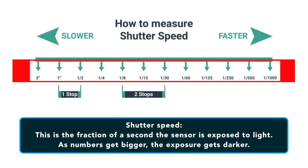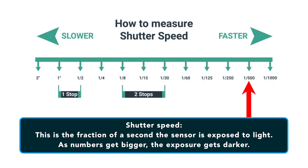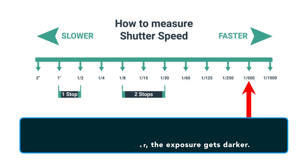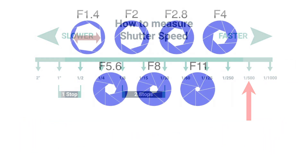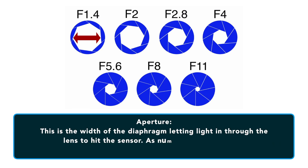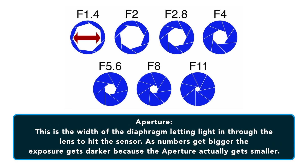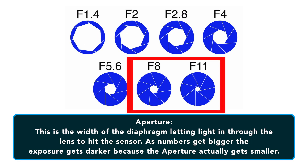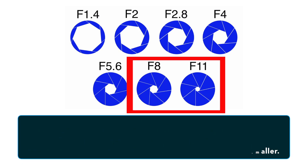Shutter speed is the fraction of a second the sensor is exposed to light. As the numbers get bigger, the exposure gets darker. Aperture is the width of the diaphragm letting light in through the lens to hit the sensor. As numbers get bigger, the exposure gets darker because the aperture is actually getting smaller.